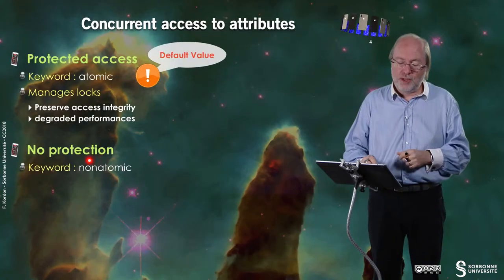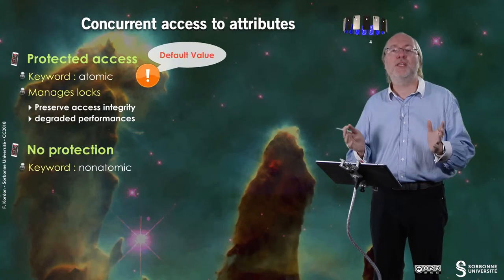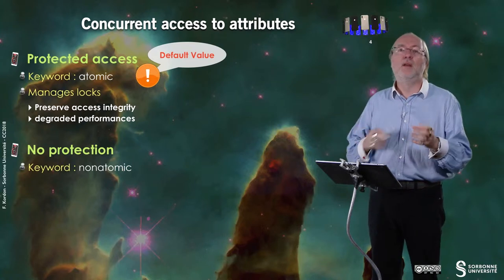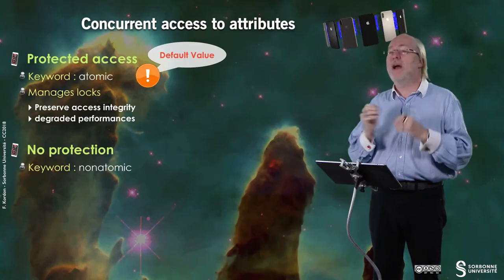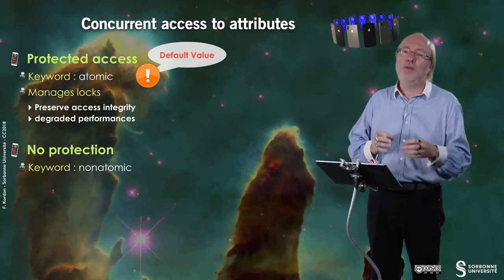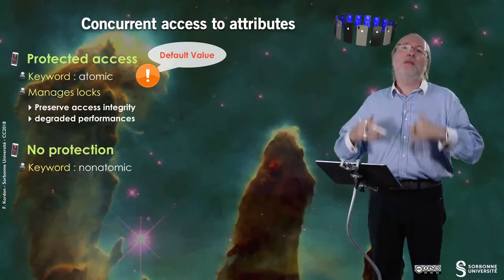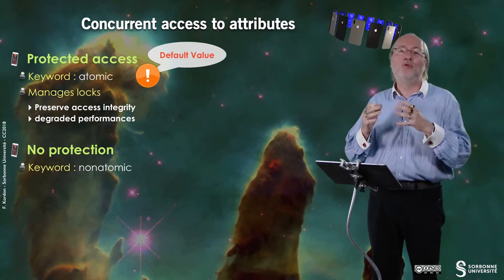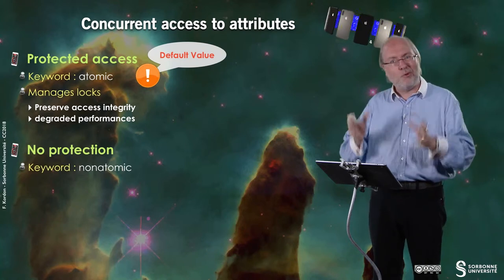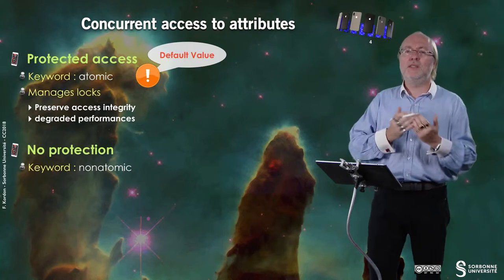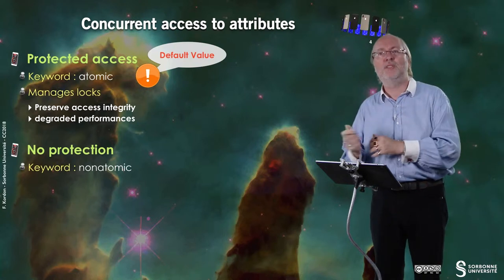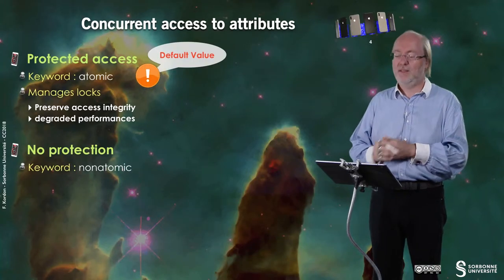The second option is to have no protection, so you specify 'nonatomic', and then nothing guarantees that you have just one read or one write at a time. You may have conflicting read-write or write-write access. Read-read is not a problem, read-write is a problem, and write-write is even worse. So if you are in a multithreaded environment and you don't master it in another way or guarantee the independence of this variable with regard to access by other threads, you should not use this specification.